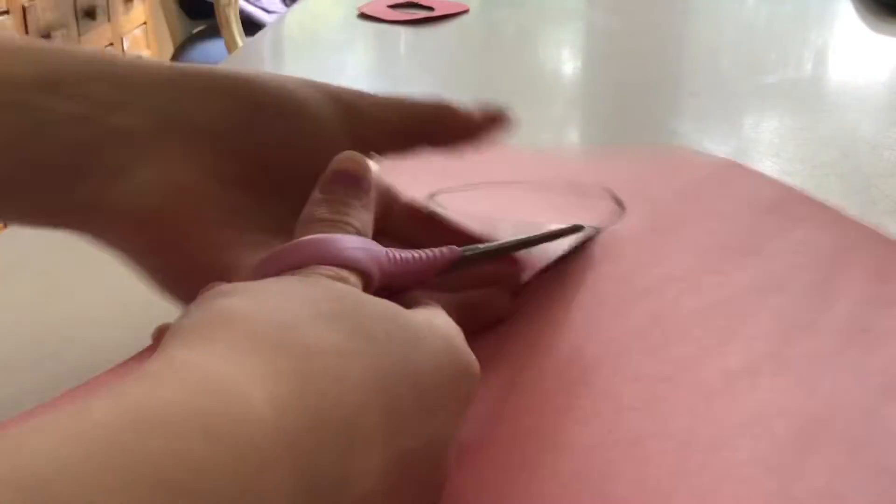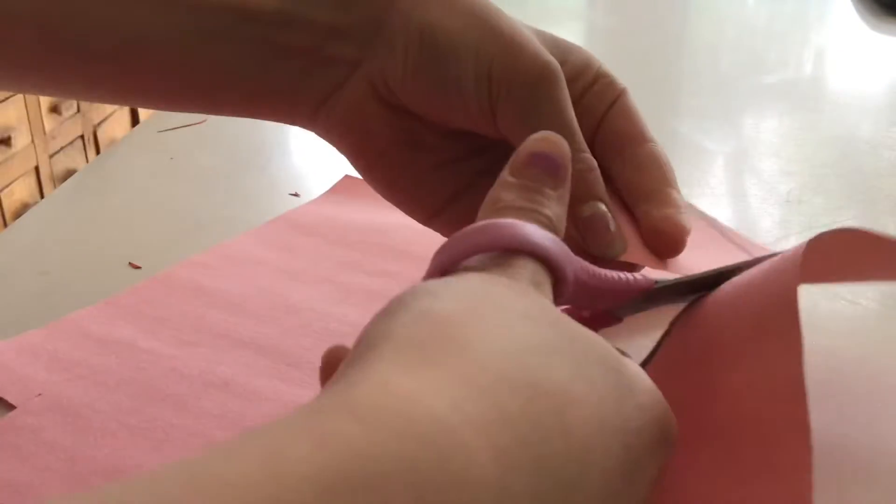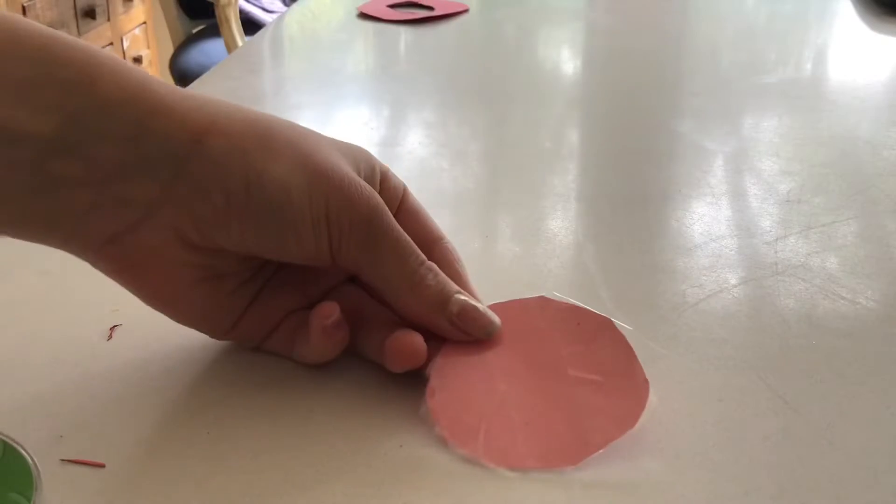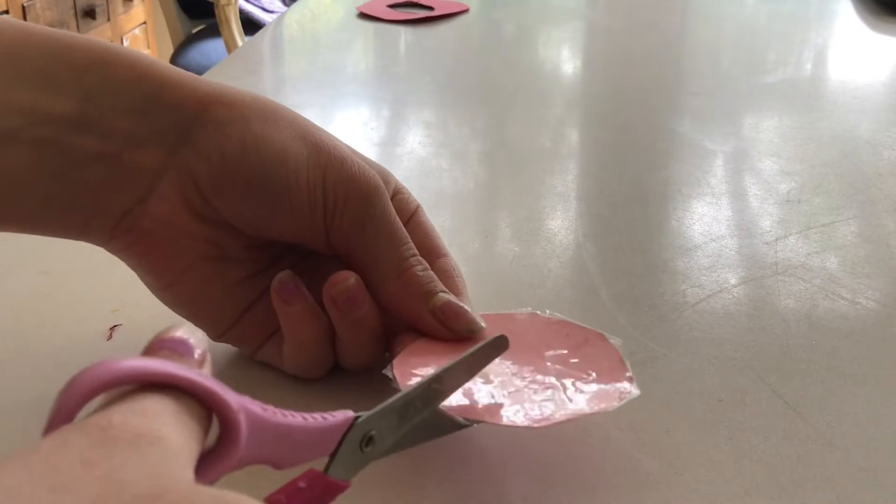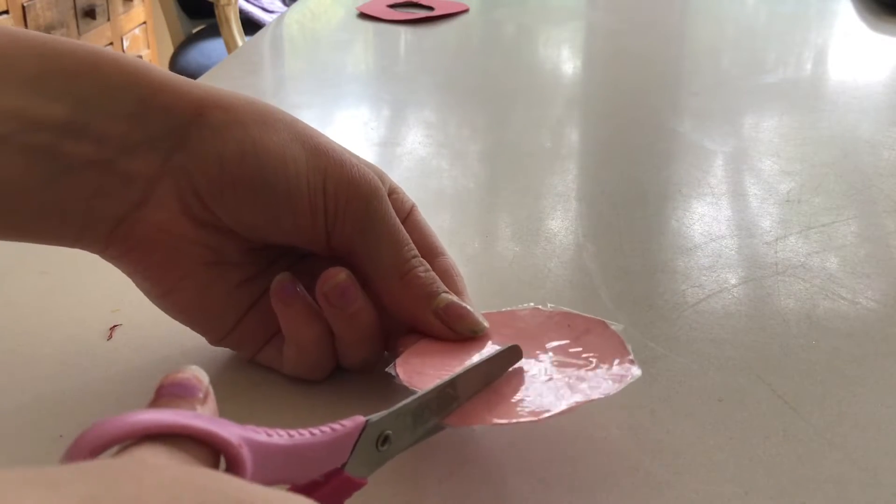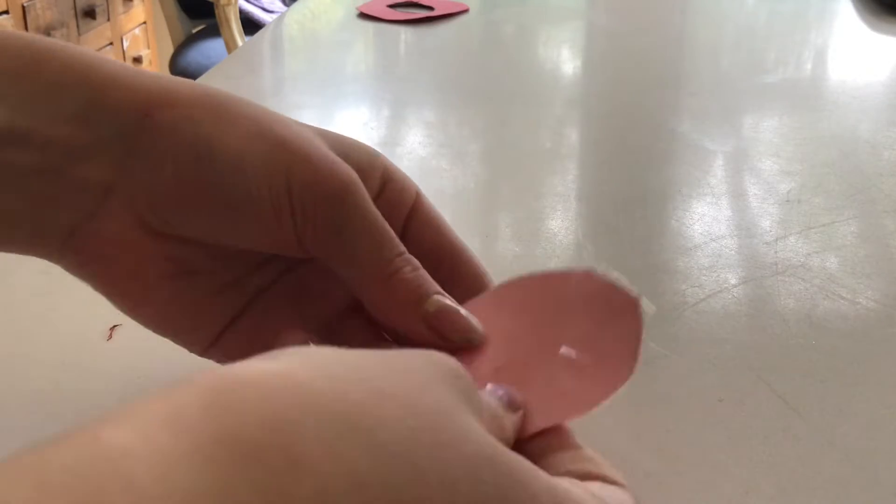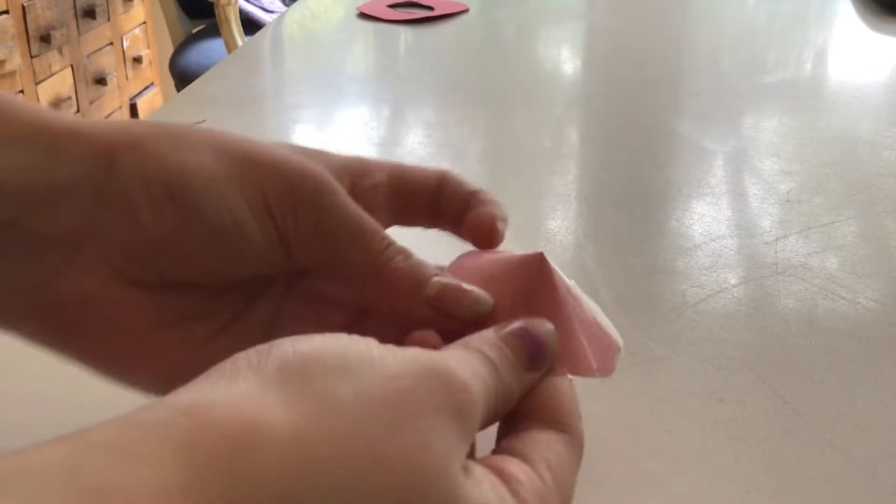Okay, so now we're going to focus on the dimple part. First you're going to want to cut out a circle and tape the whole thing back in front. Then cut a slit into the middle. After that you're going to tape it together and you're going to have a dimple.